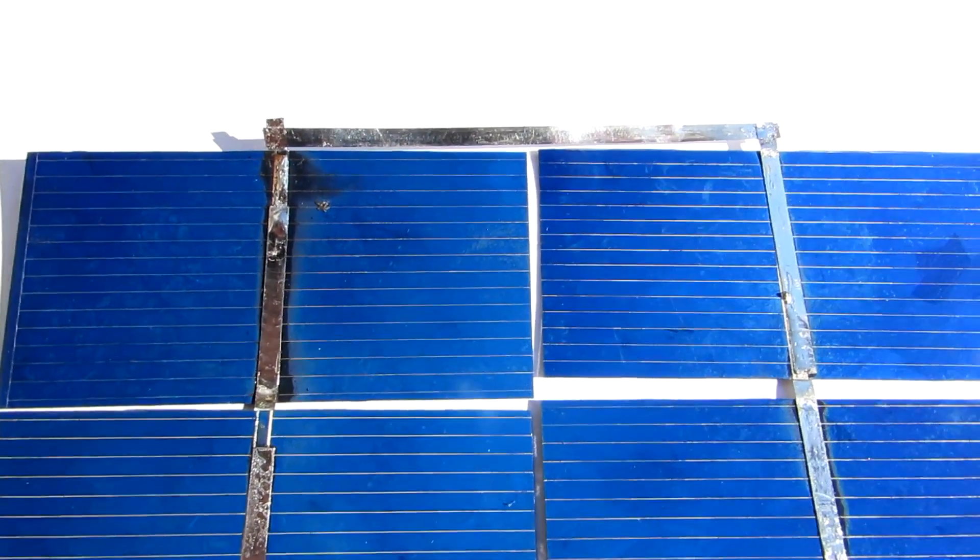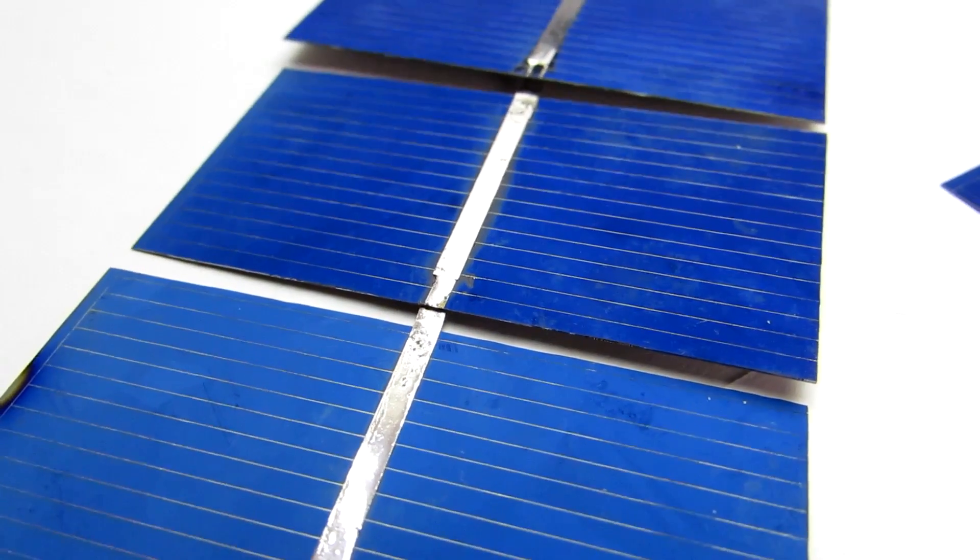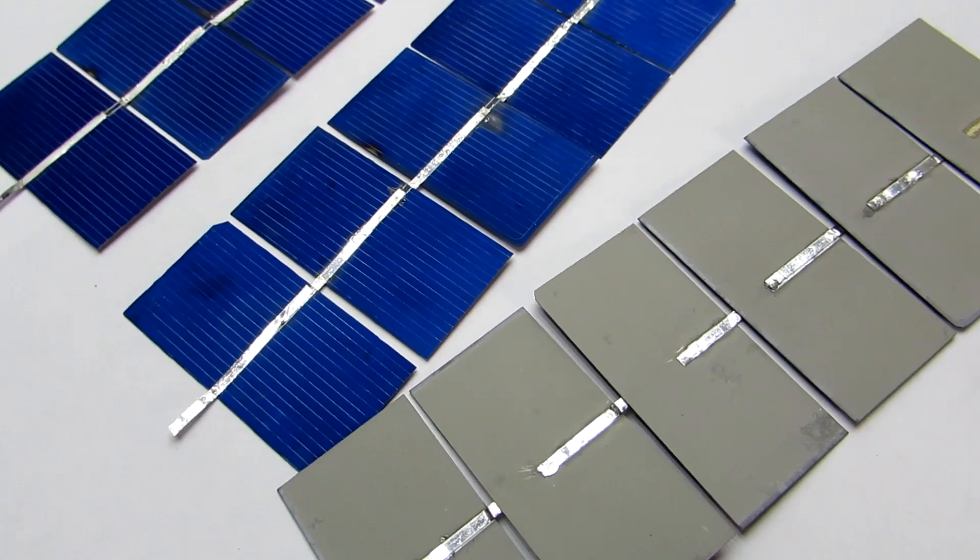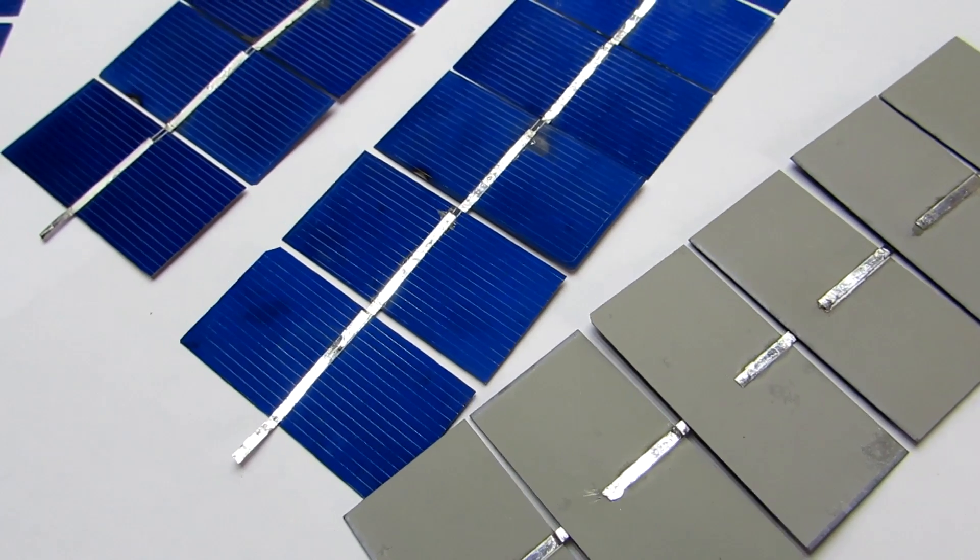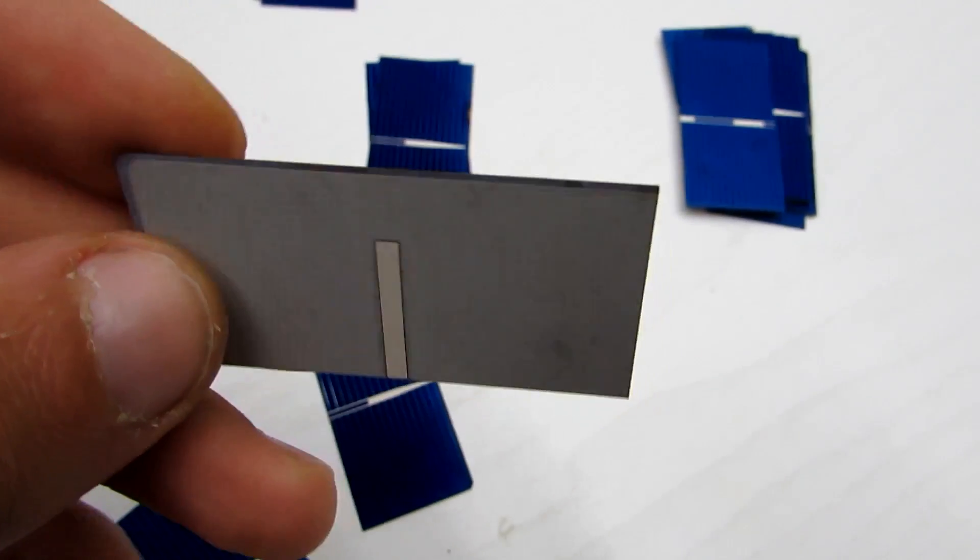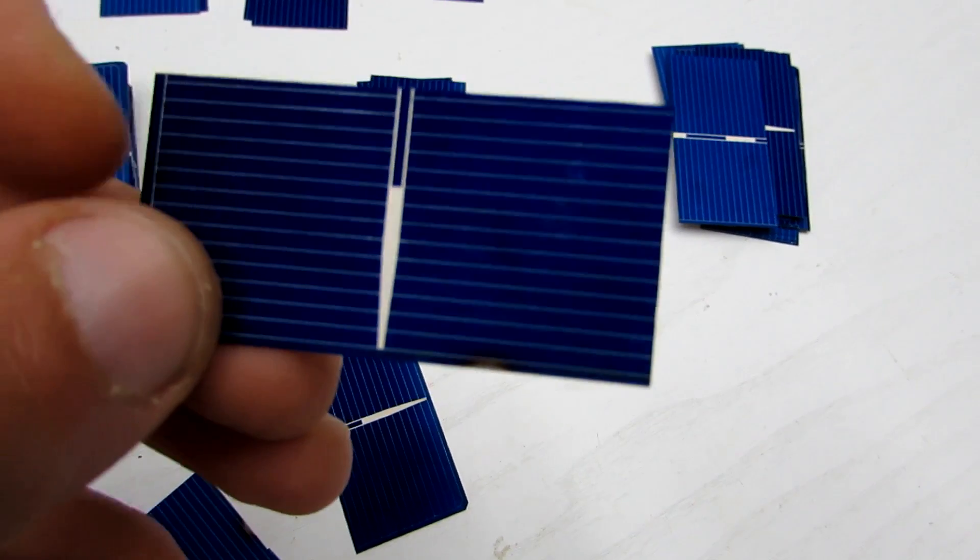A couple of tips for soldering such modules. Do all the work on a flat surface. The modules are very fragile and easily broken. Contacts on the modules don't need to be initially soldered. It's enough to slightly spread the flux.